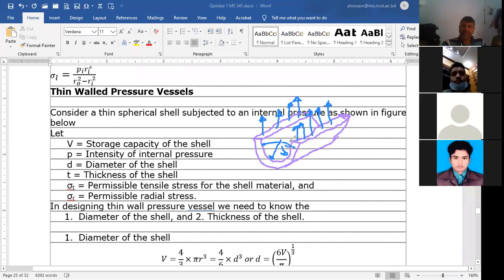To calculate the thickness T and inner radius R, when T is very very less than R, we can consider this. The thumb rule is that R by T should be greater than 20. If R by T is greater than 20, you can consider it a thin-walled vessel.